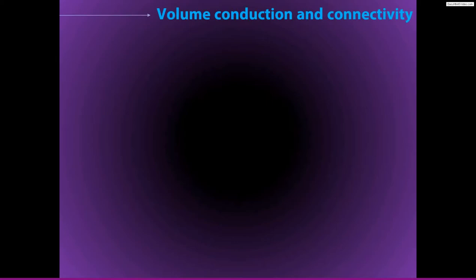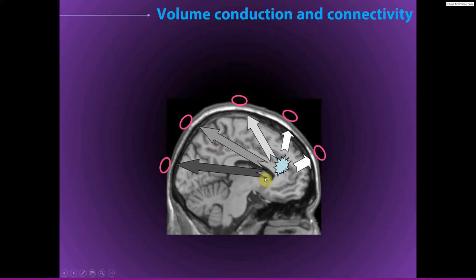The next point is actually a potential concern for connectivity analyses, and that is the issue of volume conduction. This issue has already come up, particularly in the lecture on the Laplacian. A single source in the brain will project to the activity you can record from many or sometimes even all electrodes. This is fine for just looking at EEG activity, but if you want to do connectivity analyses, this can be a significant confound. If you observe very strong connectivity between electrodes, it could actually be that the connectivity is artifactually high — it's not really connectivity, it's just that you're measuring the same source from both electrodes.